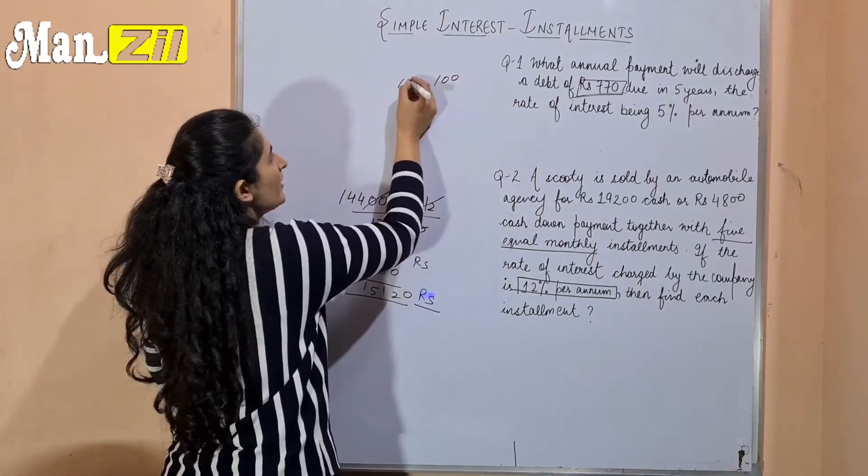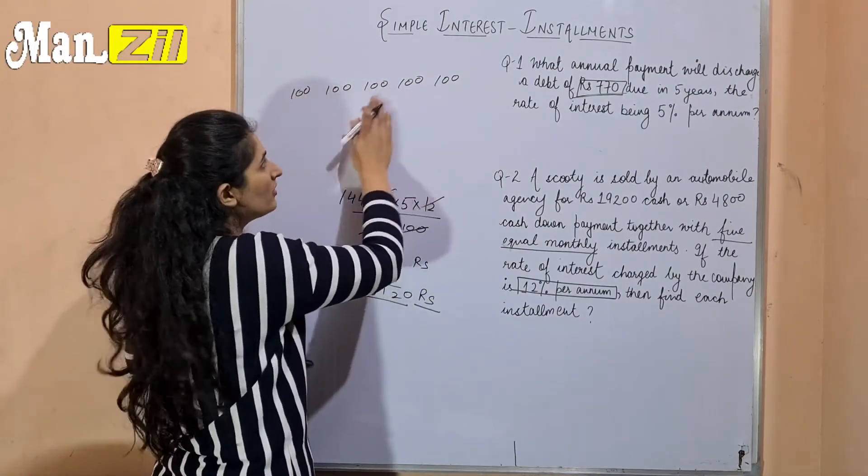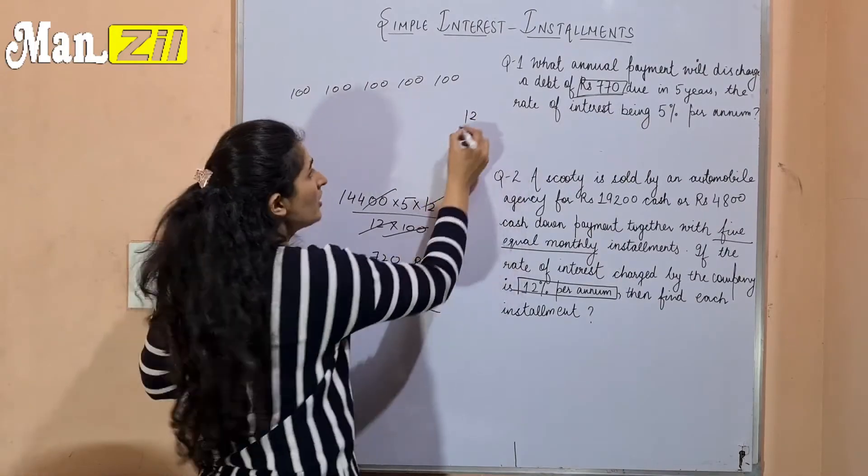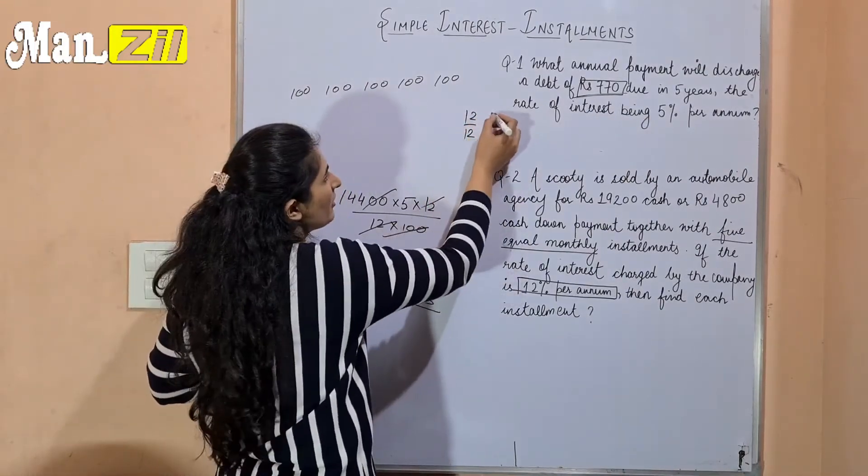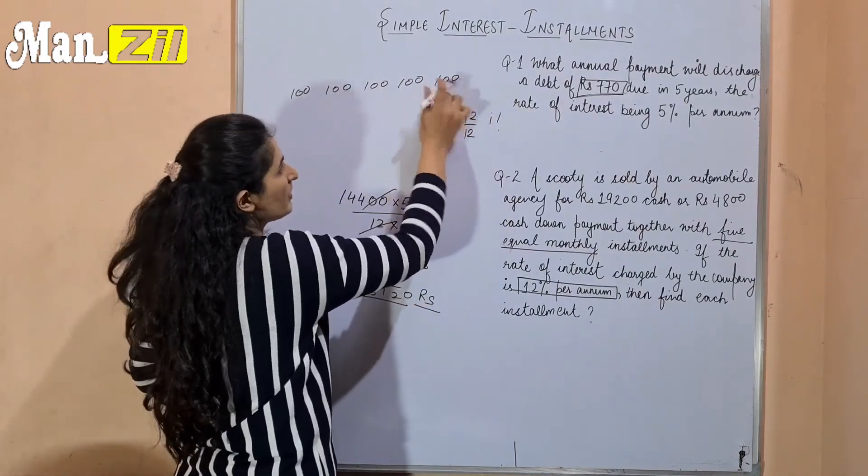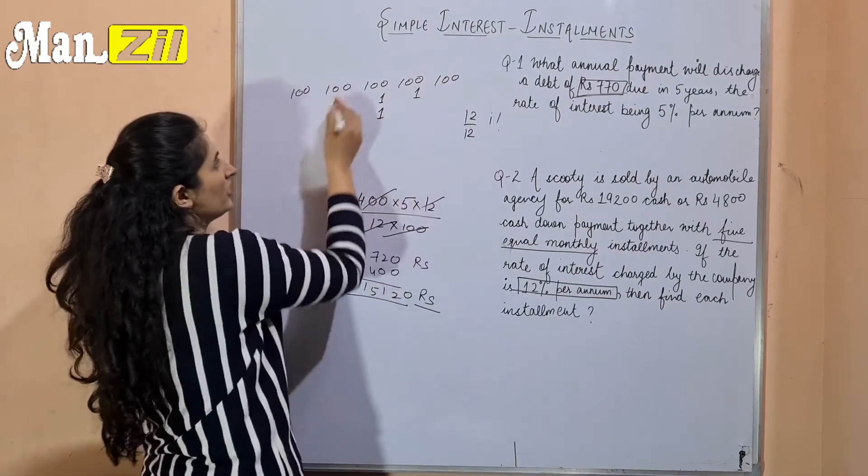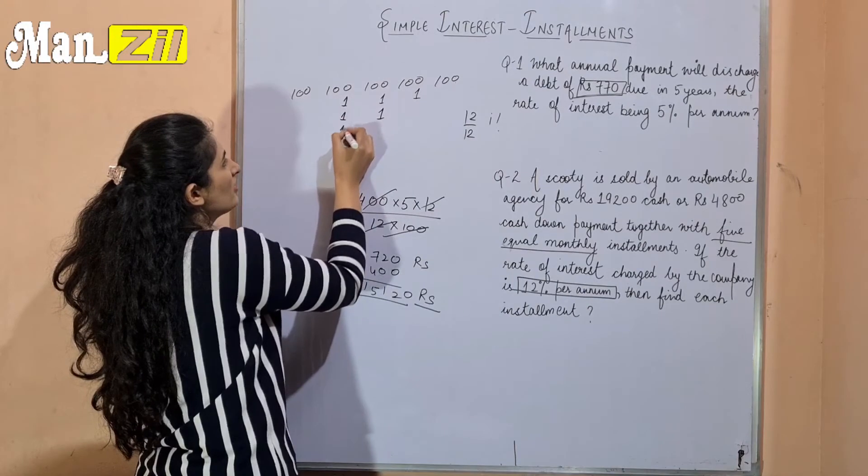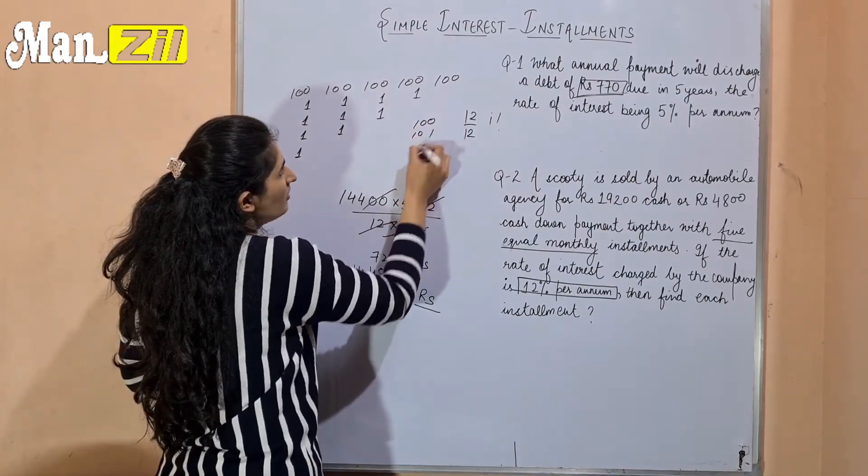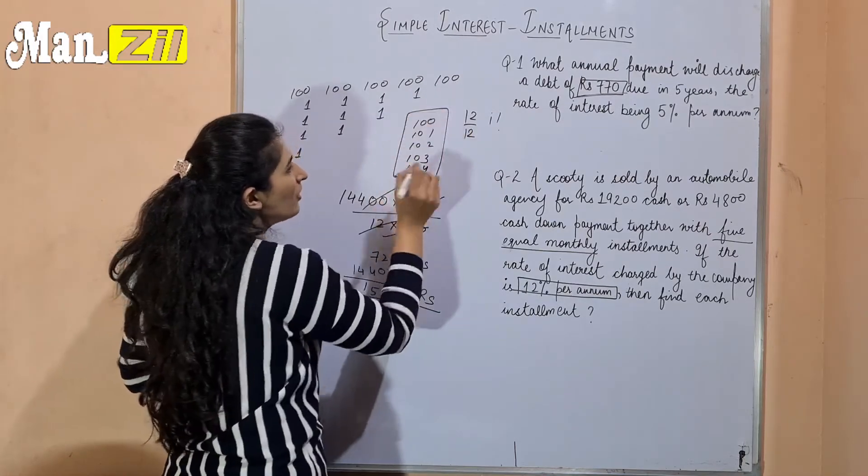For 100 units in the first installment, in the second, third, fourth, and fifth installments, we will add 1% interest each month. So this is 100, 101, 102, 103, 104. This is my 5 installments total, which equals 510 units.